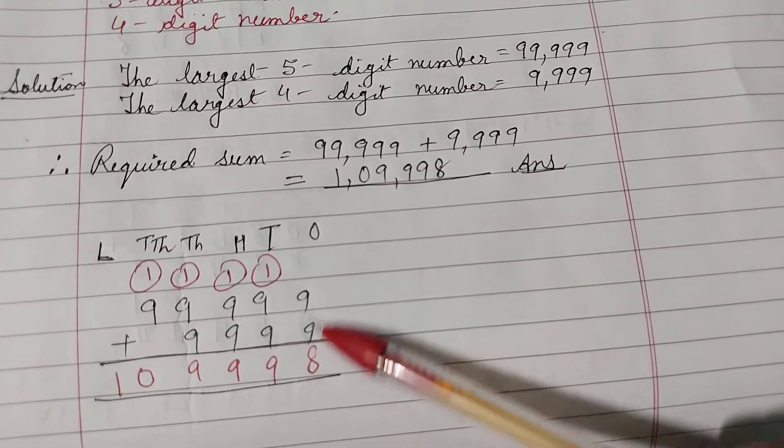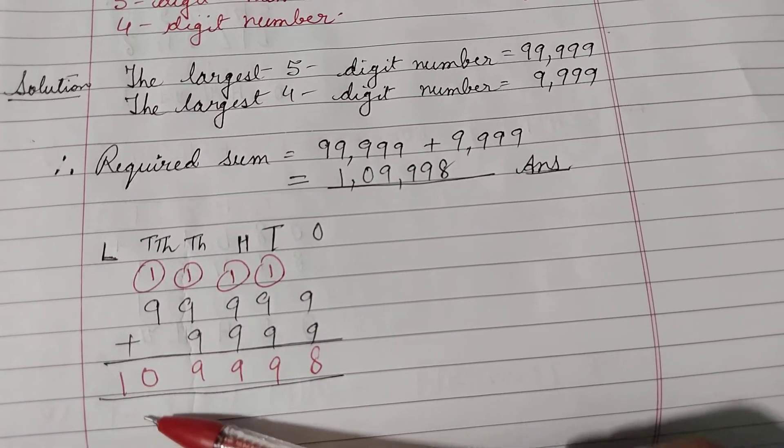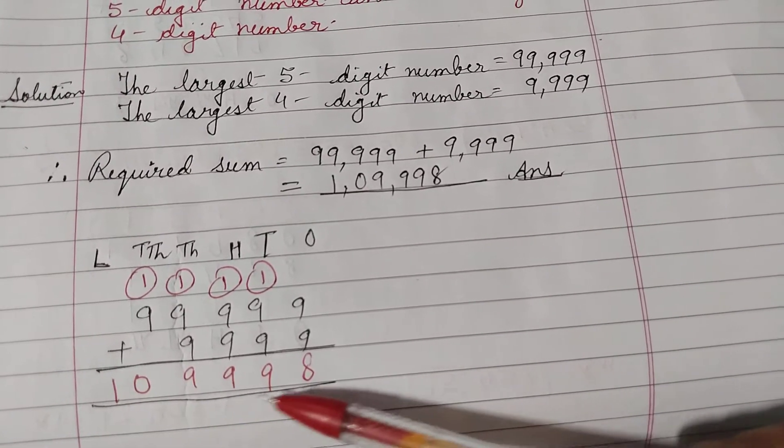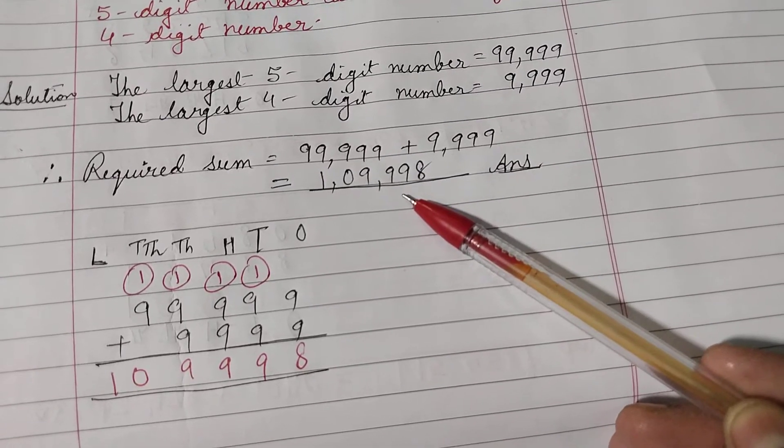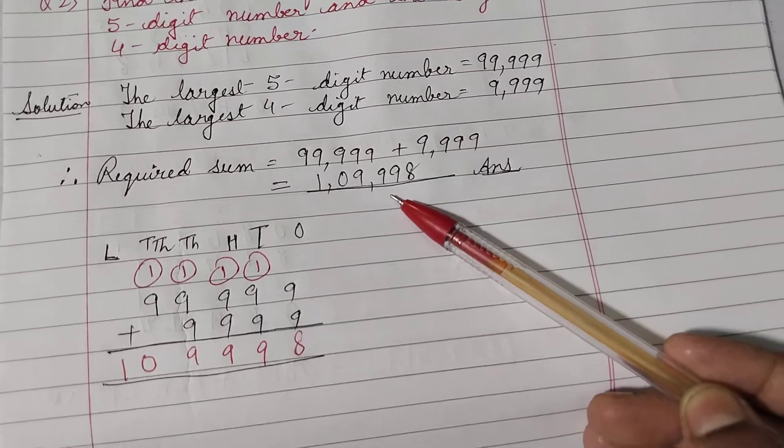Again, children, you need to arrange according to the place value chart. On addition, we are getting 1,09,998. So, write here your answer. I hope you are getting, children. Now, question number 3.